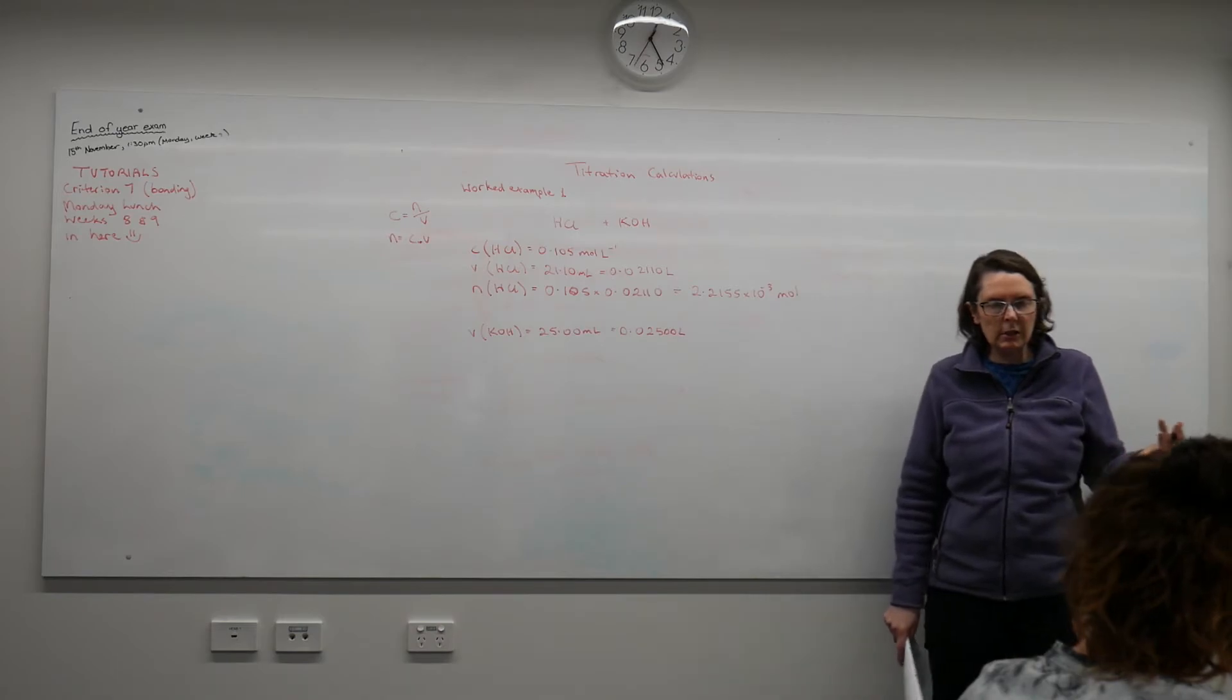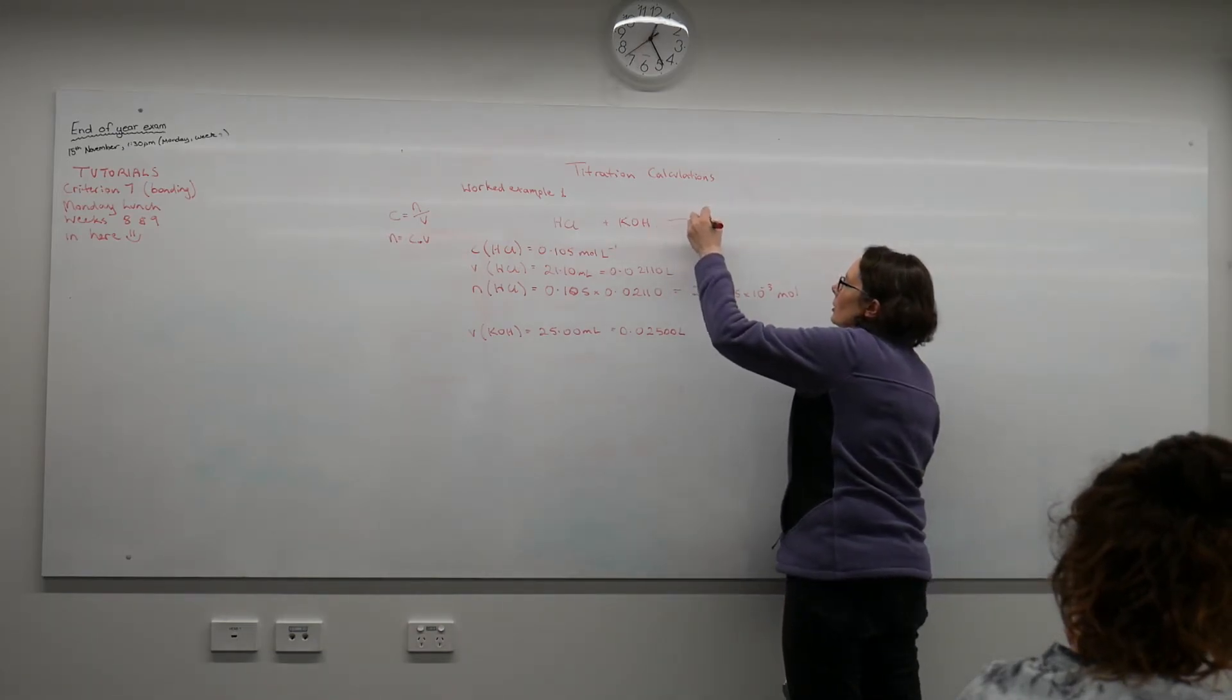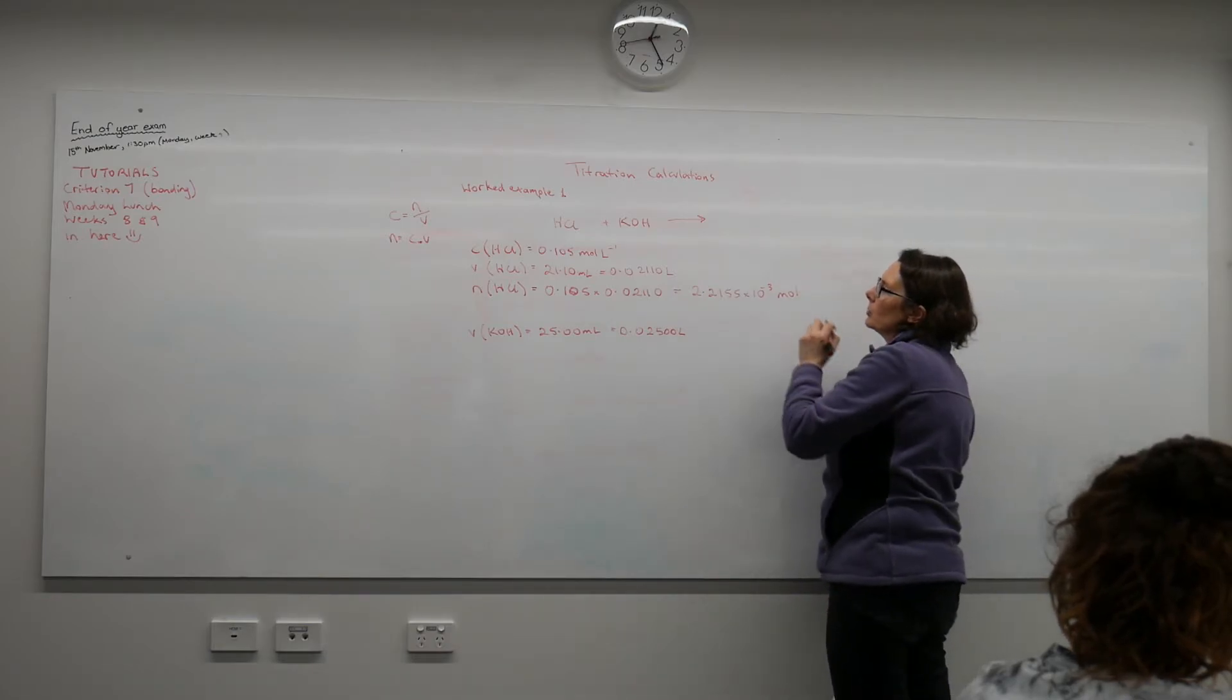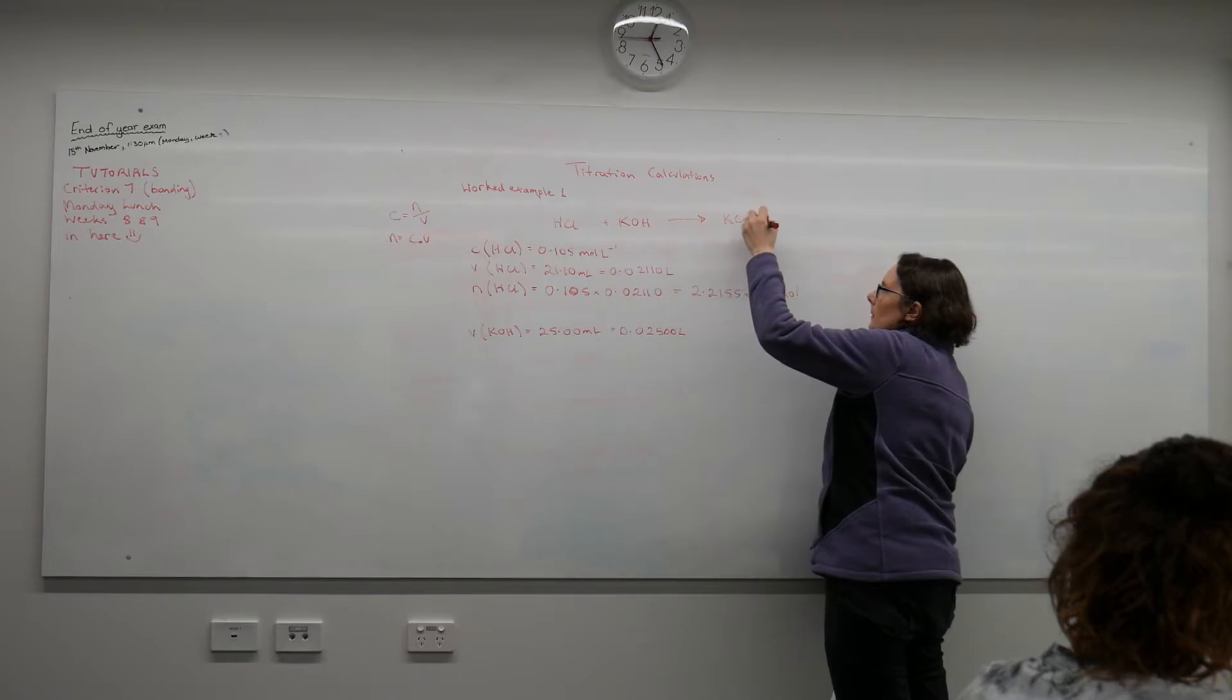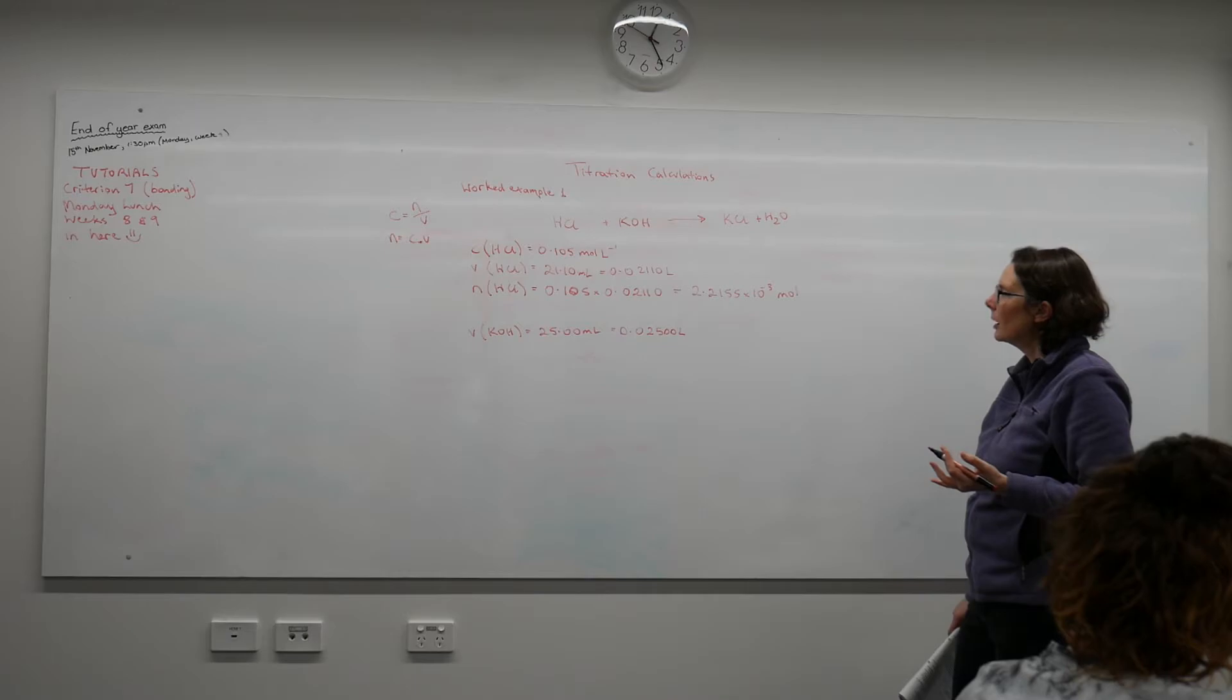And the process of working these out is always the same. We know that when we react our acid with our base, it produces salt plus water. And in this case we produce potassium chloride.